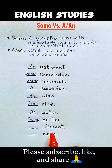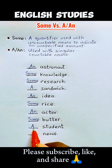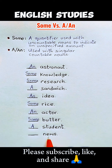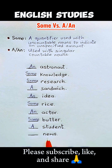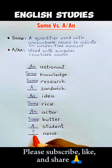'Student' is a countable noun, it is singular, and it begins with a consonant sound, therefore we use 'a' — a student. Now, 'news' — is it 'some news,' 'a news,' or 'an news'? This question is for you. Leave your answer in the comment section.